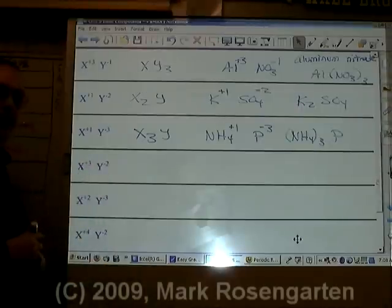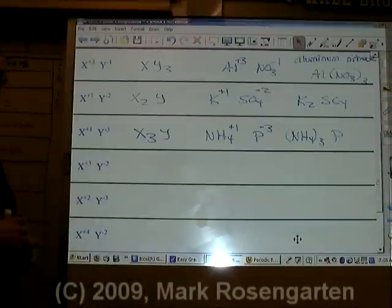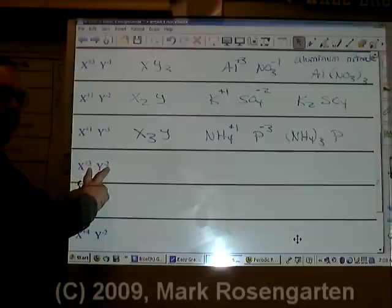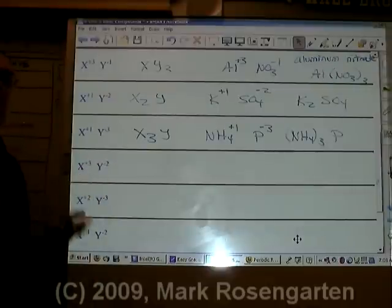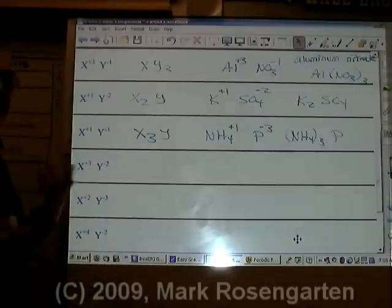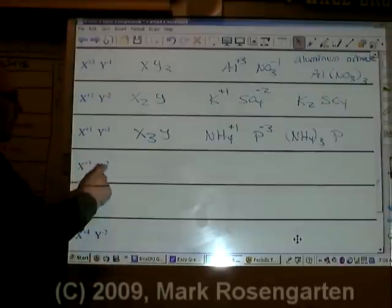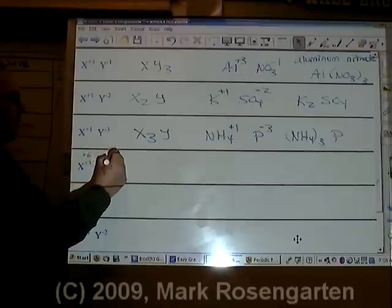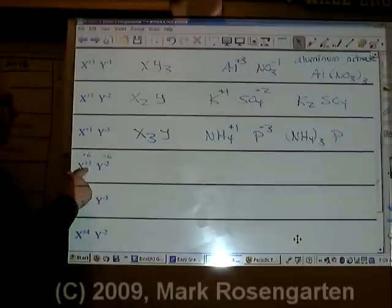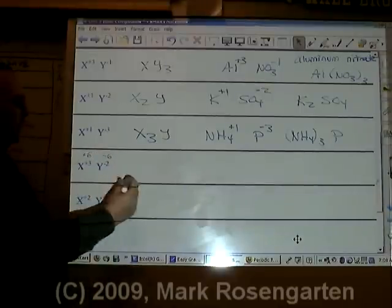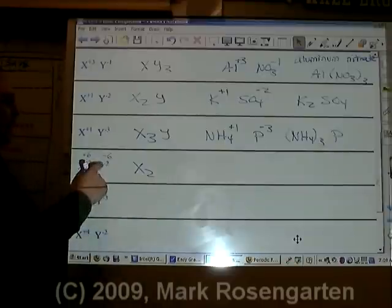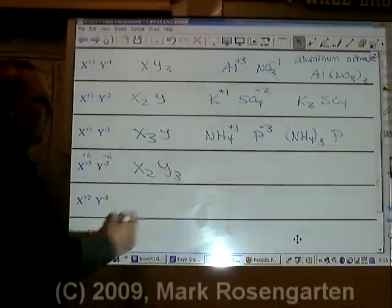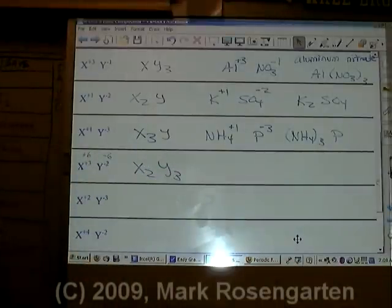X plus three, Y minus two. That's a little bit more complicated. So, what you do is you multiply these two numbers. And that will represent the total charge you're going to end up with when your formula is written. Three times two is six. So, we want this to be plus six and this to be minus six. How many plus threes does it take to make plus six? Two of them. How many minus twos does it take to make minus six? Three of them. And the formula is X₂Y₃.